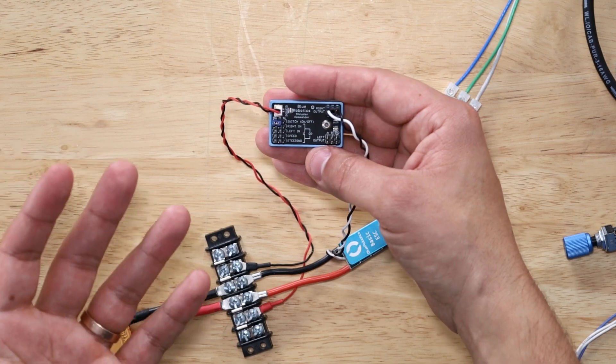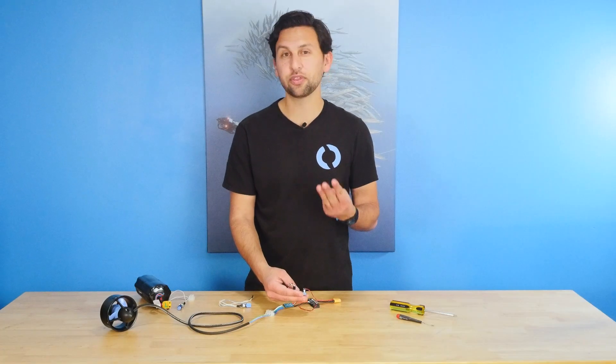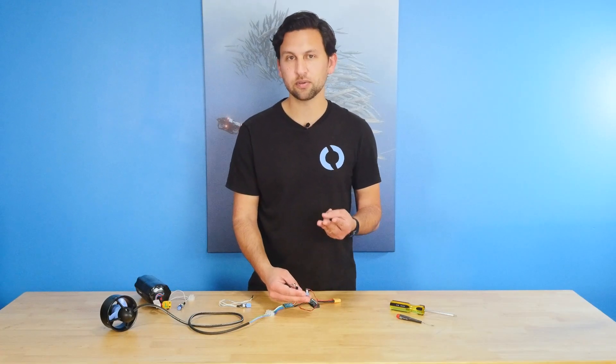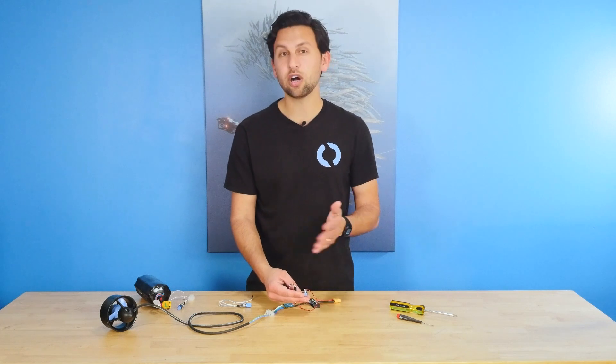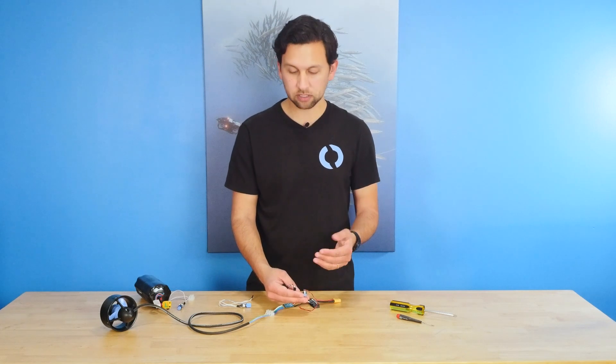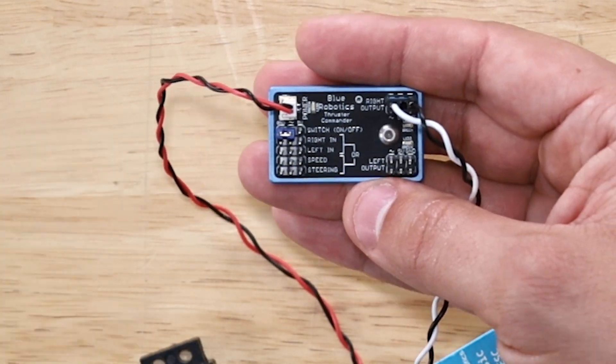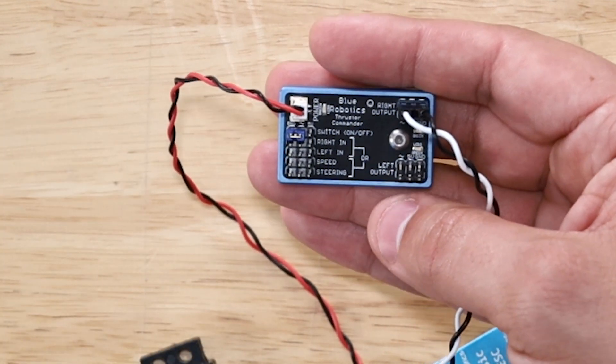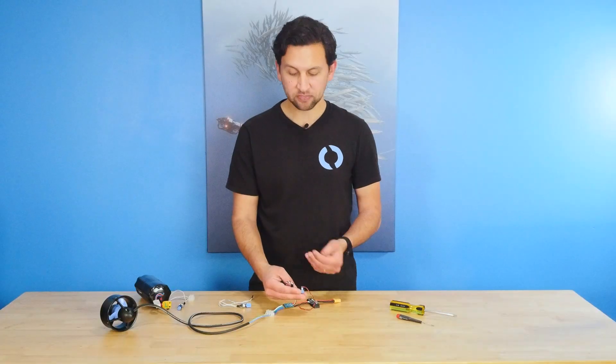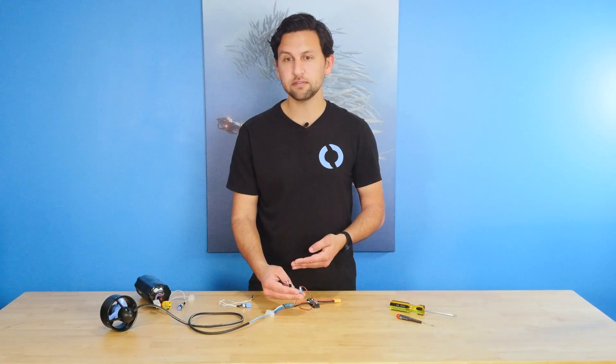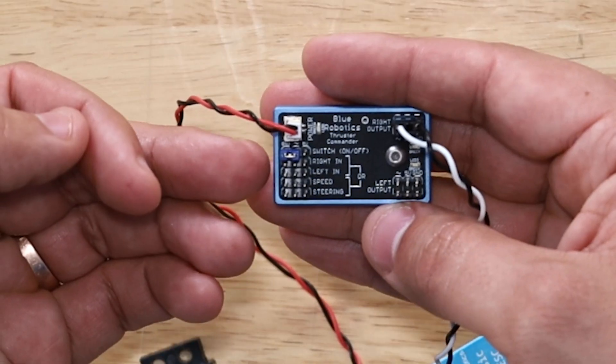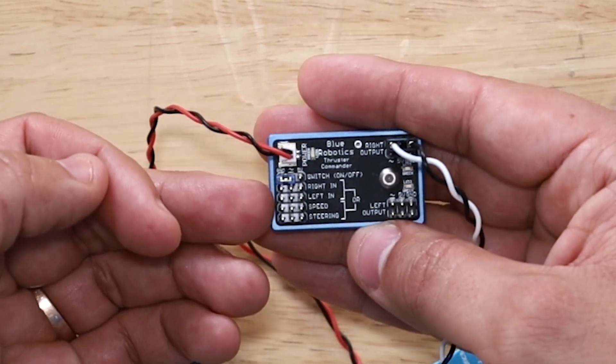Underneath that are four inputs for the potentiometers. There are really three ways to control the thrusters that are connected to this. If you want all four outputs to output the same signal, you can connect a potentiometer up to the speed input right here. And it will just control the speed of all four thruster outputs at the same time.